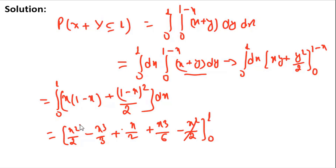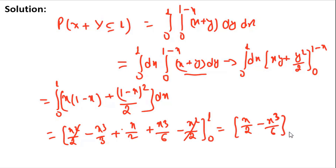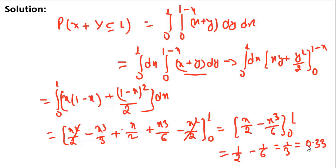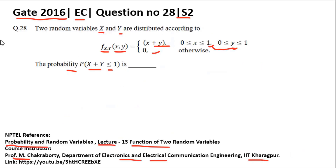After simplification, the terms combine and cancel to give ∫₀¹ [x/2 - x³/6] integrated from 0 to 1, yielding [x²/2 - x³/6] evaluated at the limits 0 to 1. Substituting the limit gives 1/2 - 1/6 = 1/3, which equals 0.33. So the correct answer for this question is 0.33.